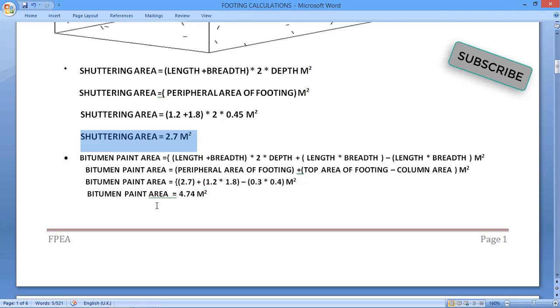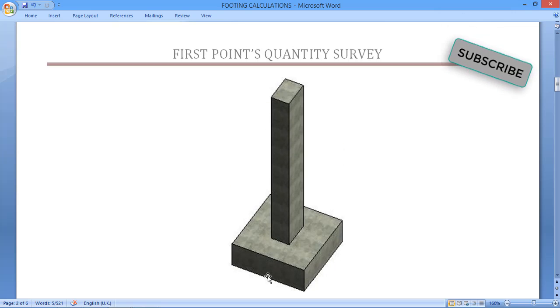Now we have to calculate the bitumen paint area. Where do we apply the bitumen paint? For the footing, we have to apply four sides, then we have to apply the top area also.